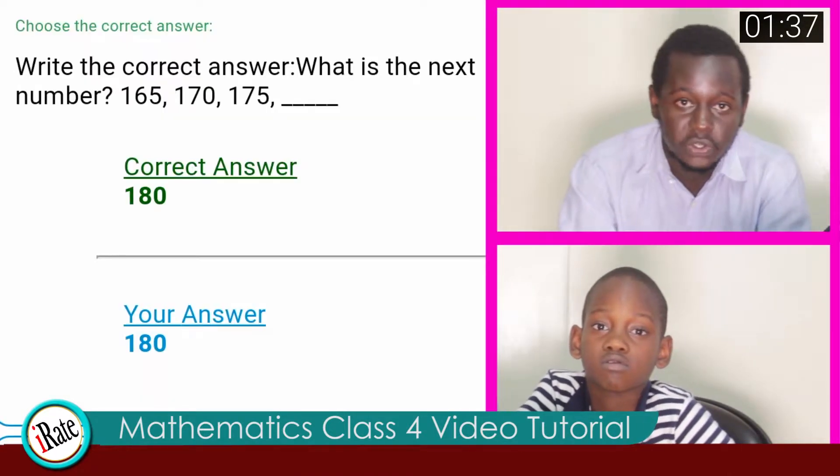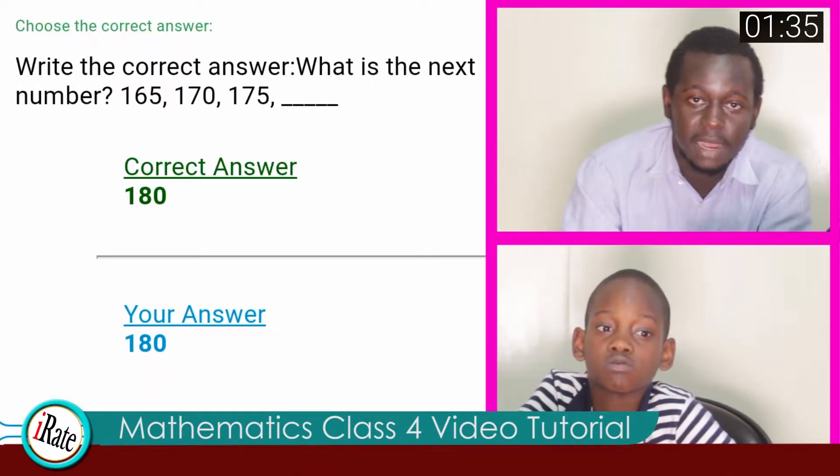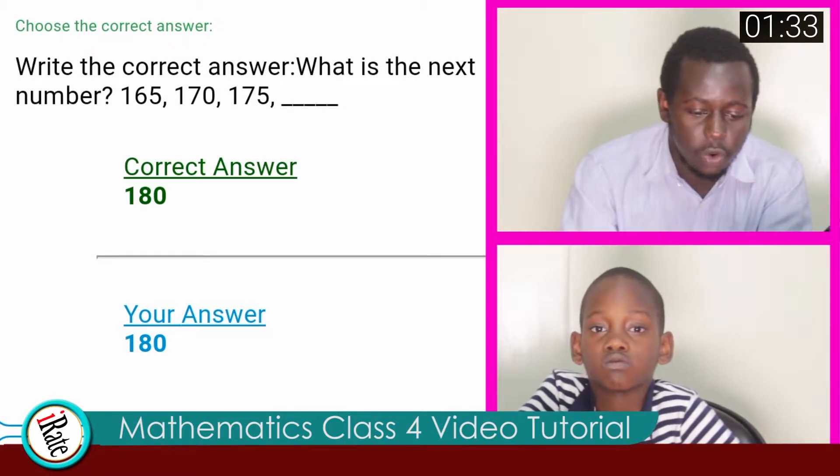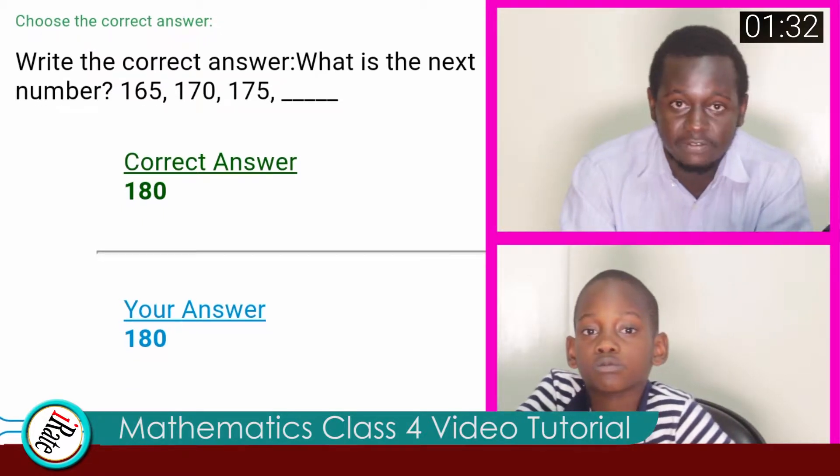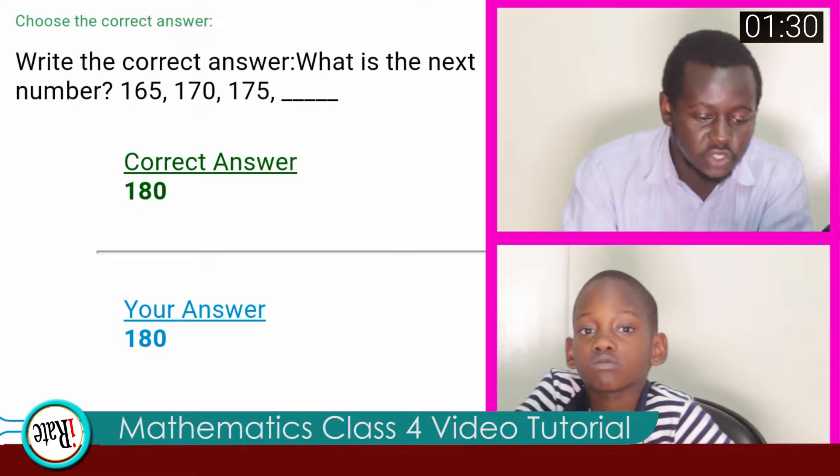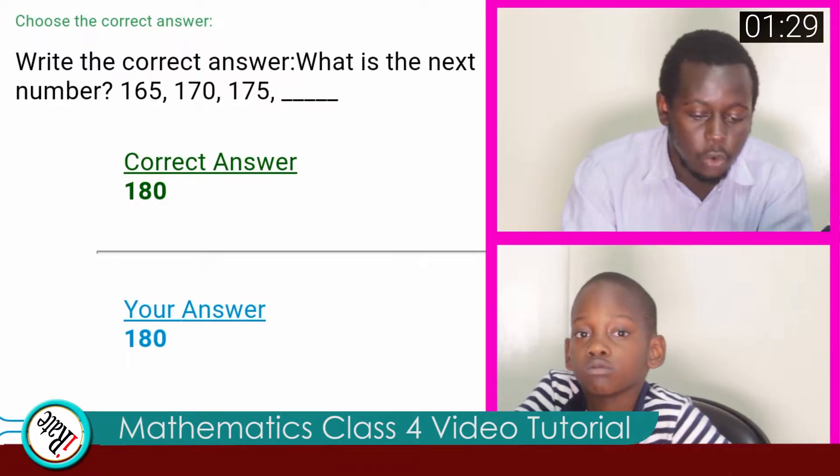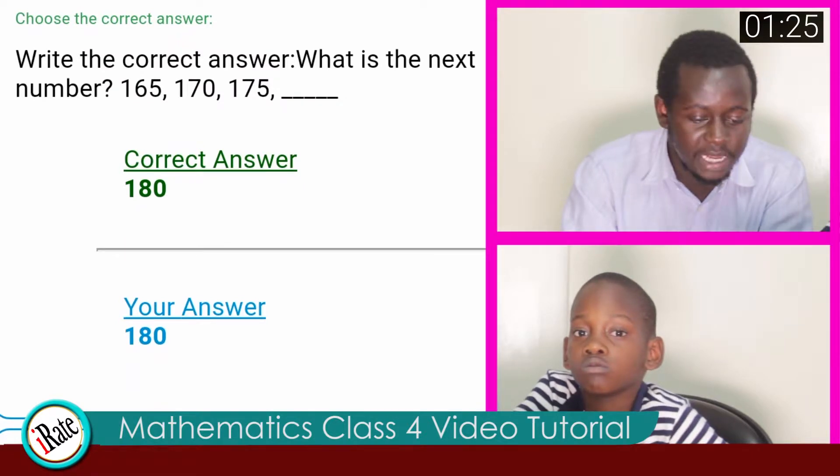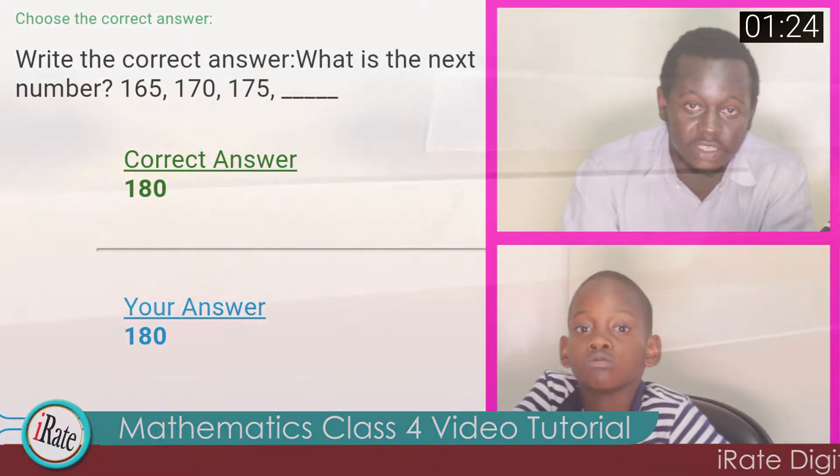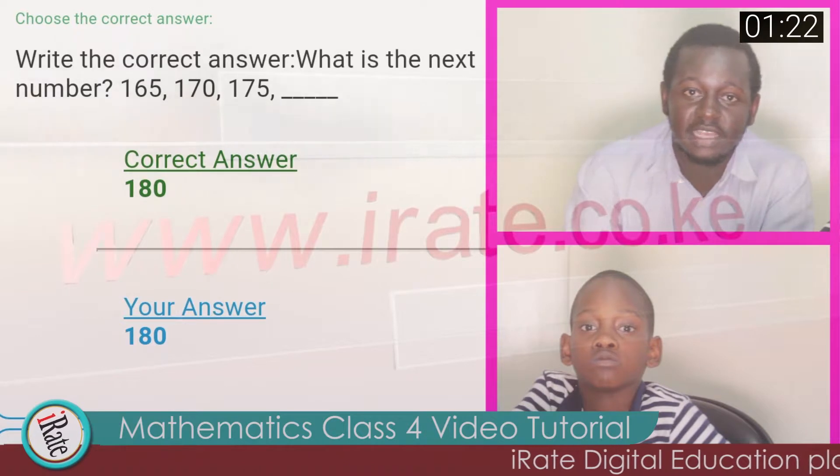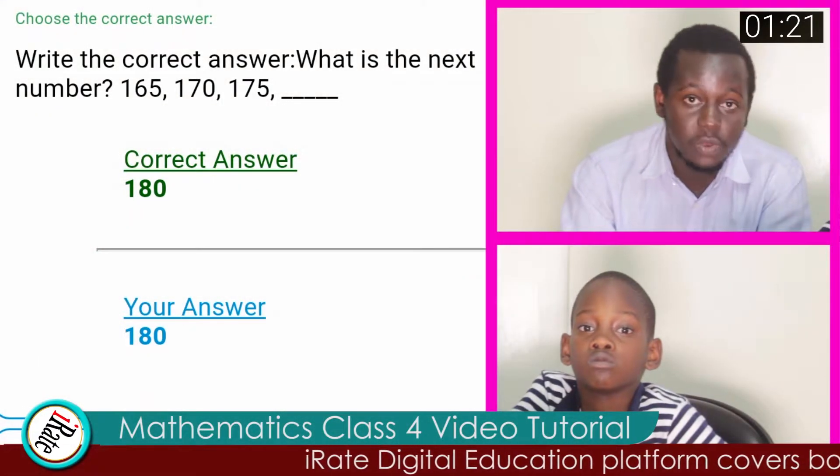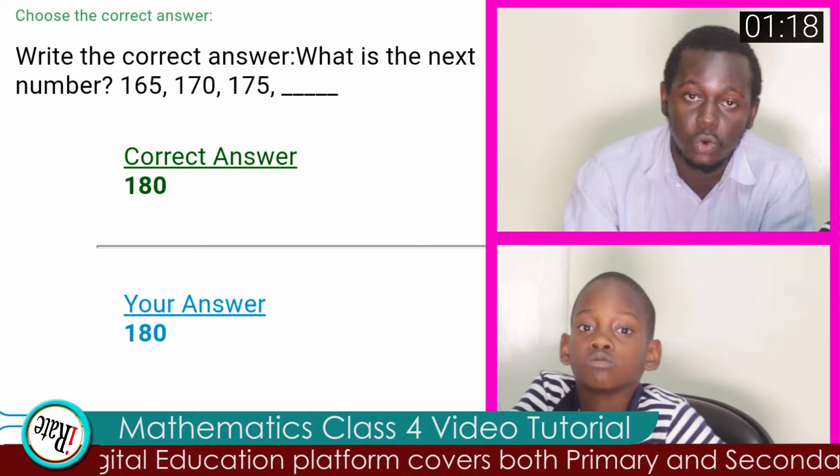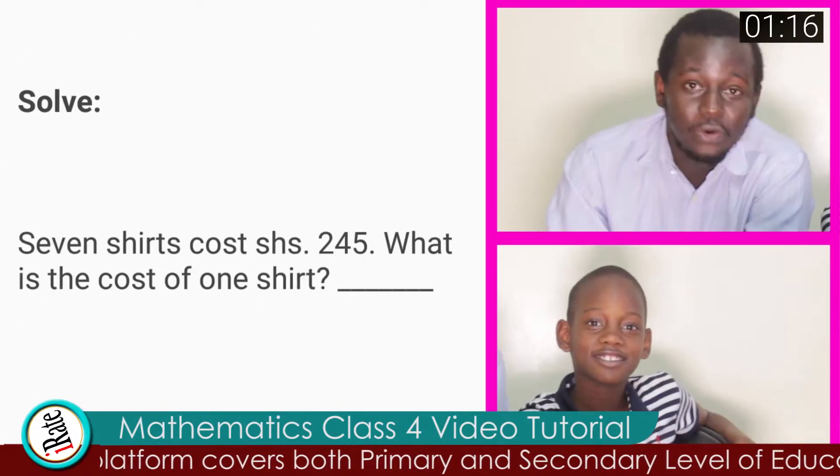This is a sequence question. And in every sequence, there is a pattern to follow. For instance, the first number is one sixty-five and then the second number is one seventy. When you minus one sixty-five from one seventy, you get five. The same thing, when you minus one seventy-five minus seventy, you get five. That means the next number after one seventy-five, we are supposed to add five, which then comes to one hundred and eighty.